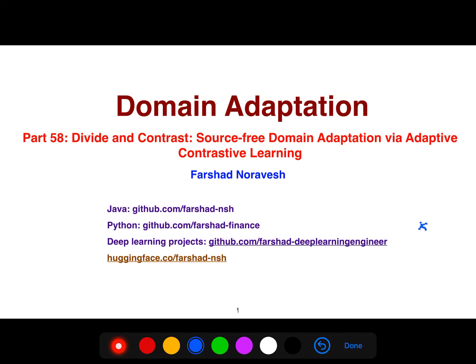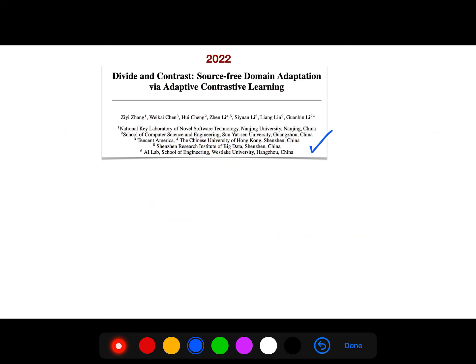In this video, I'm explaining another important article about domain adaptation. The title is 'Divide and Contrast: Source-Free Domain Adaptation via Adaptive Contrastive Learning.' I have a playlist about contrastive learning you can watch. This article is from 2022. When we say source-free, it means we don't even have access to source data for different reasons, like privacy concerns.